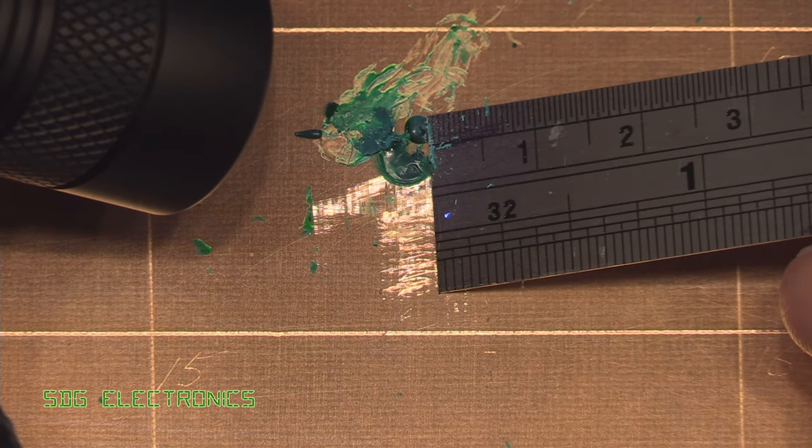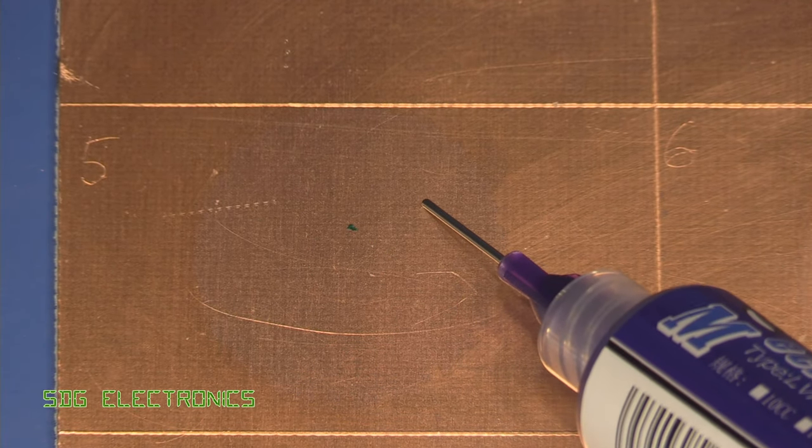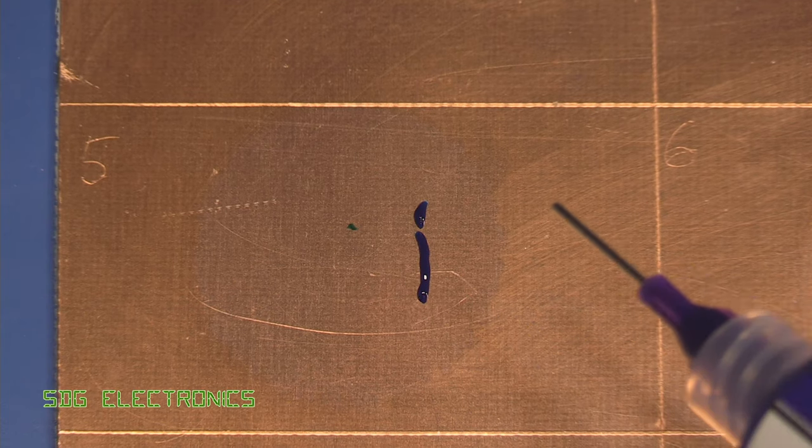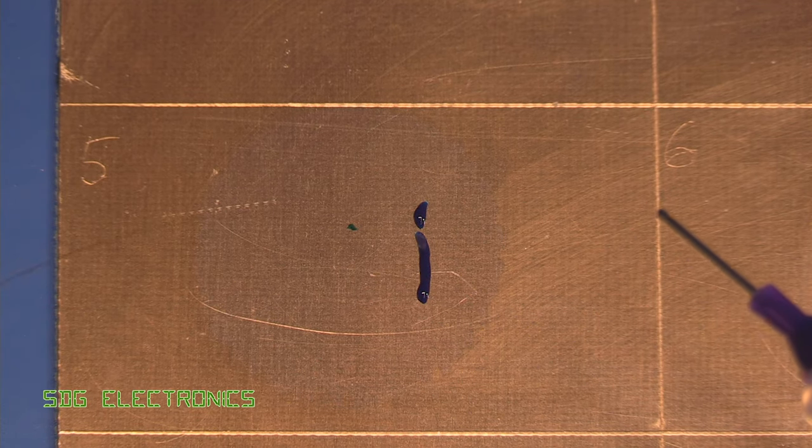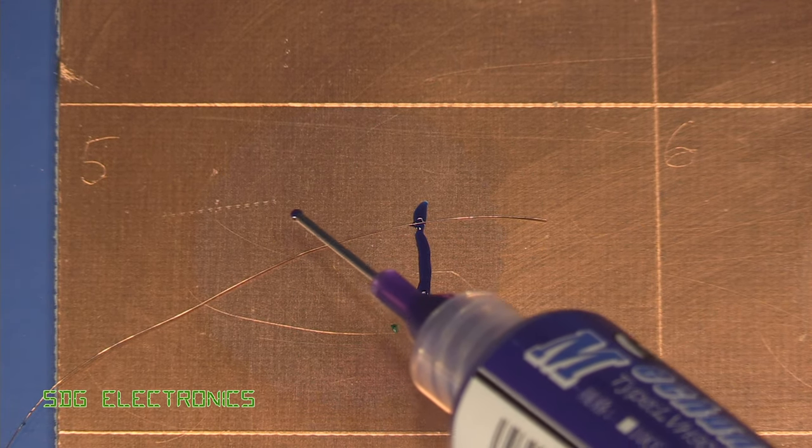So here we've got the blue. Let's squirt a little bit on the board here. And then also we'll just try gluing down a little bit of enameled copper wire as if you're using it to help with a repair.